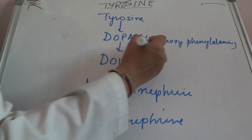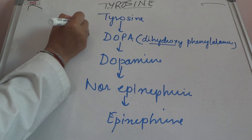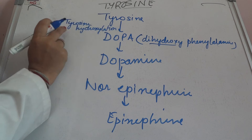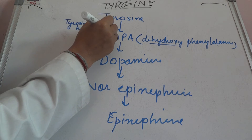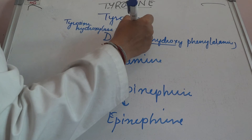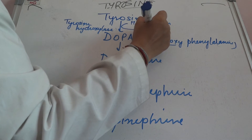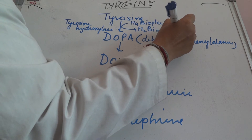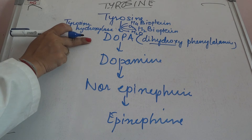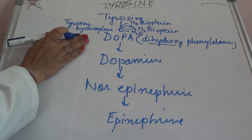This means that there has to be hydroxylation of tyrosine to form dihydroxyphenylalanine. So the enzyme is tyrosine hydroxylase, because we require a hydroxylation reaction. All hydroxylation reactions generally require vitamin C, but here it requires tetrahydrobiopterin, which forms dihydrobiopterin. Since it is a hydroxylation reaction, it also requires oxygen.